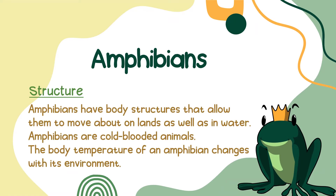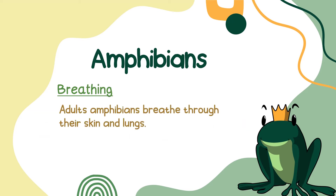Amphibians have body structures that allow them to move about on land as well as in water. Amphibians are cold-blooded animals. The body temperature of an amphibian changes with its environment. Adult amphibians breathe through their skin and lungs.